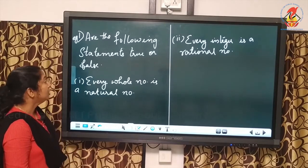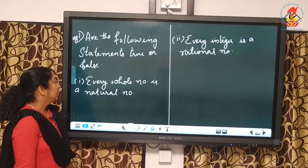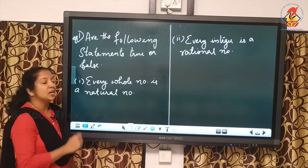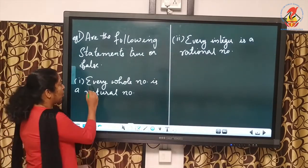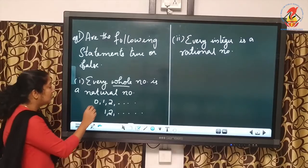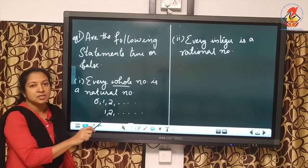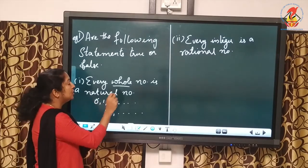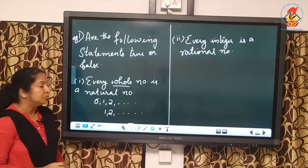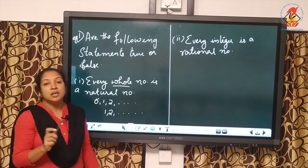Example 1 — state whether the following statements are true or false. The first one: every whole number is a natural number. Whole numbers are 0, 1, 2, 3, etc., but natural numbers start from 1, 2, 3, etc. Since 0 is not included in natural numbers, this statement is false.